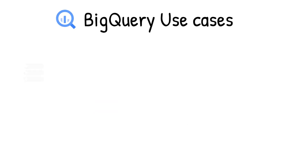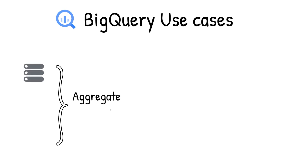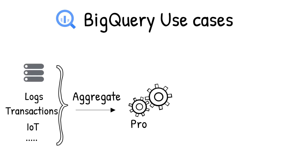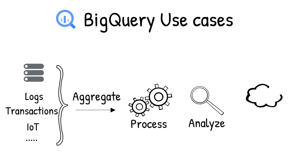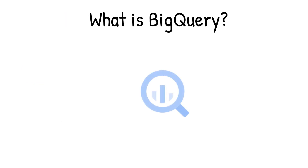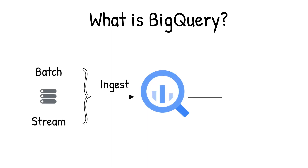Organizations rely on data warehouses to aggregate data from disparate sources, process it, and make it readily available for data analysis that supports their strategic decision making. You can ingest data into BigQuery either through batch uploading or streaming data directly to deliver real-time insights.